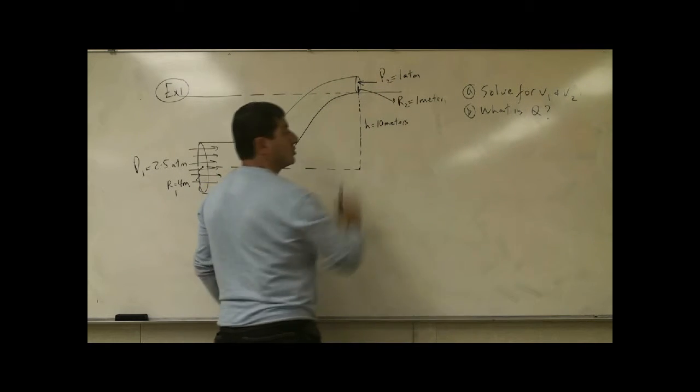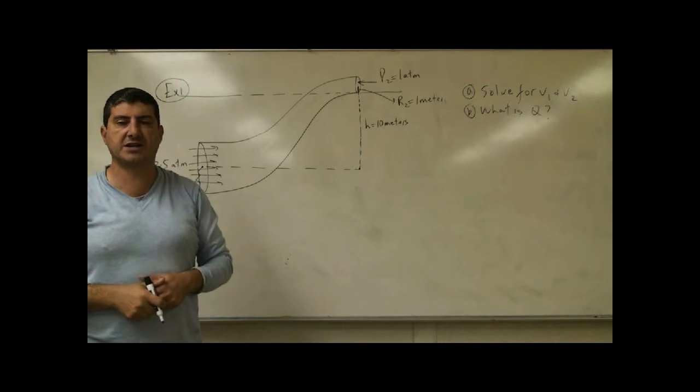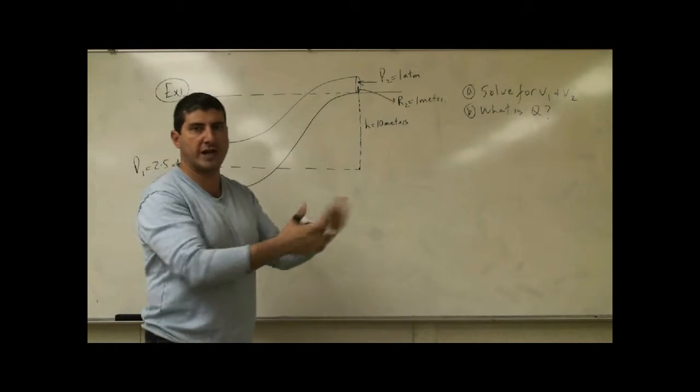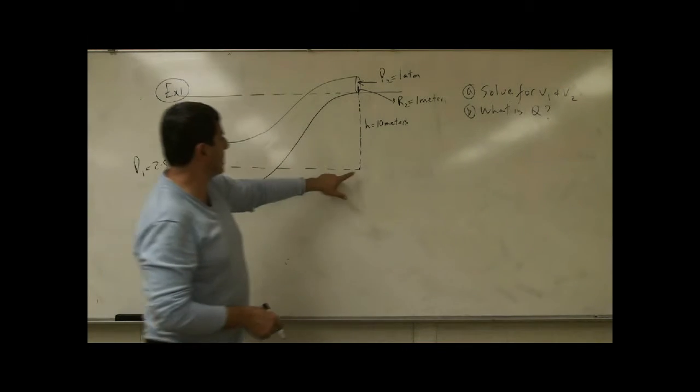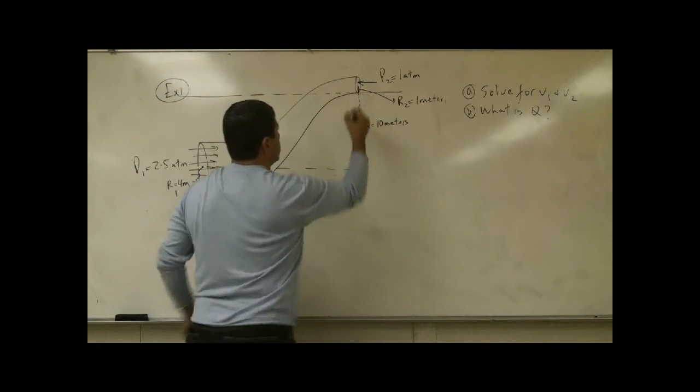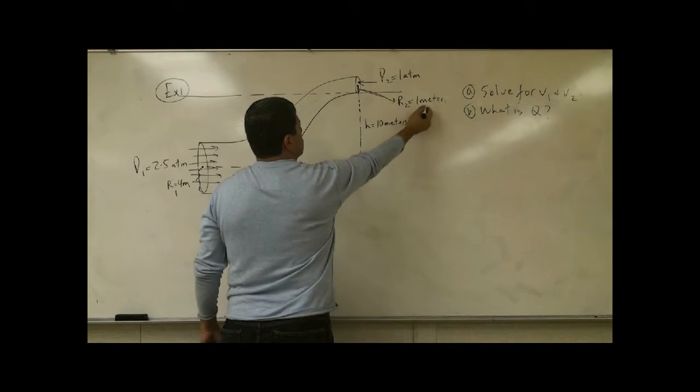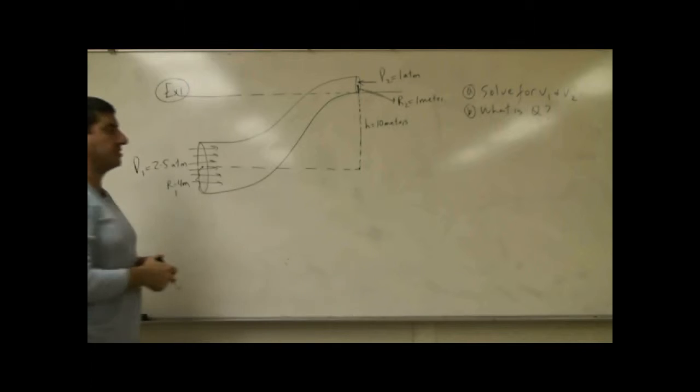The pressure pushing back here is regular atmospheric pressure because the tube is outside in the air, so it's exposed to atmospheric pressure. The height elevation from here all the way to the center of the tube is 10 meters. The radius of the tube is 1 meter here and 4 meters here.